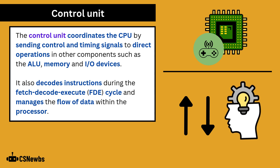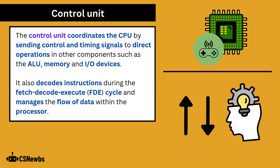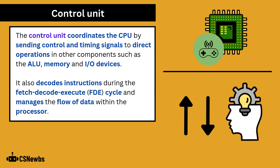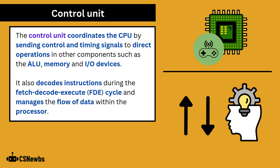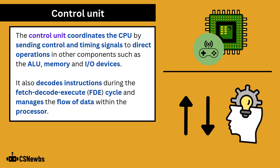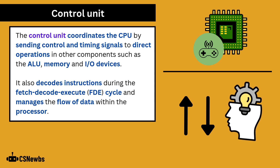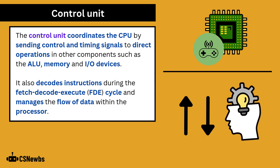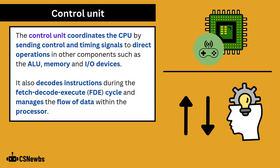The control unit coordinates the CPU by sending control and timing signals to direct operations in other components, such as the ALU, memory, and input and output devices. It also decodes instructions during the fetch-decode-execute cycle and manages the flow of data within the processor.